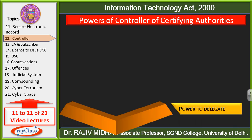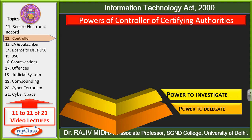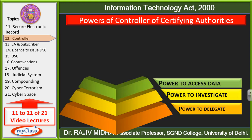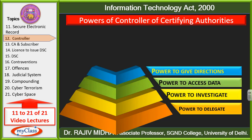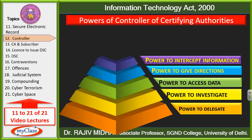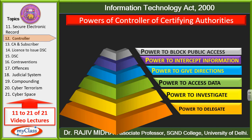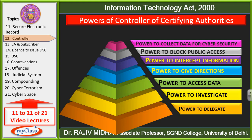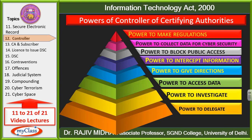Now the powers of Controller of Certifying Authorities. Pahle mein aapko saari powers list kar deta hoon aur iske baad hum inko discuss karenge: 1) Power to delegate; 2) Power to investigate; 3) Power to access data; 4) Power to give directions; 5) Power to intercept information; 6) Power to block public access; 7) Power to collect data for cyber security; and 8) Power to make regulations.